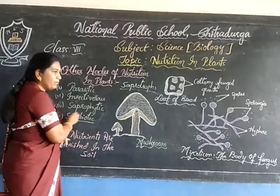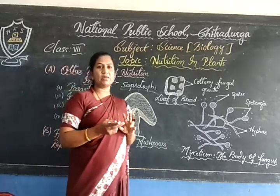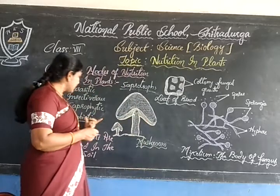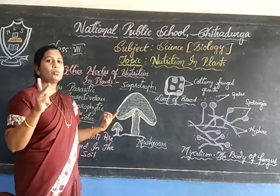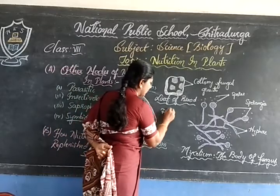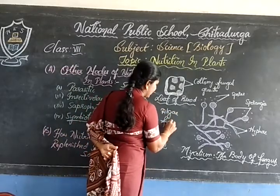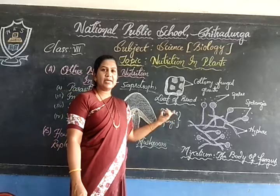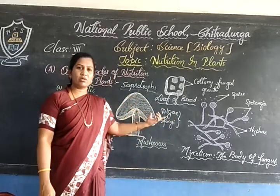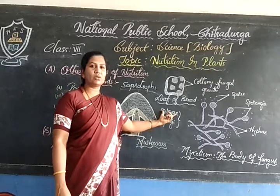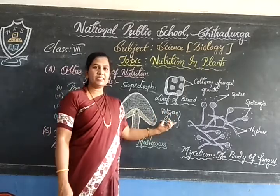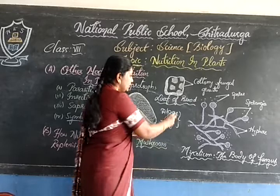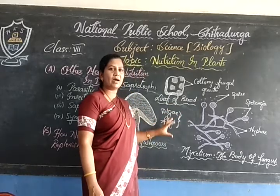Next is the symbiotic mode of nutrition. Symbiotic means mutualism — 'bio' means organism, it is a very good association between two organisms. One good example is the association between algae and fungi. Algae, as you know, is photosynthetic because it is green in colour and has chlorophyll. Fungi, on the other hand, is non-photosynthetic because it does not contain chlorophyll. A very good association forms between the algae and the fungi.